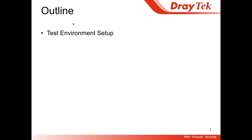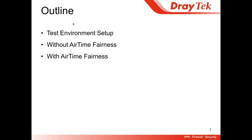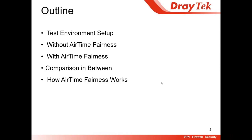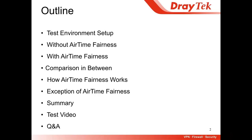This is the outline. First, I'll tell you how we set up the test environment. Without Airtime Fairness, we do the Wi-Fi performance test. Then we enable Airtime Fairness and do the Wi-Fi performance test again, and compare the results. Based on the results, I start to explain how Airtime Fairness works and also explain the exceptions. Then the Summary and Q&A.